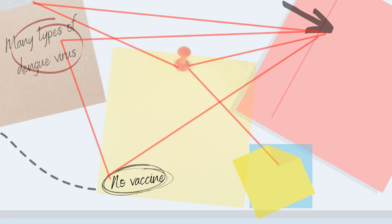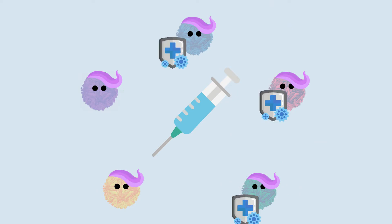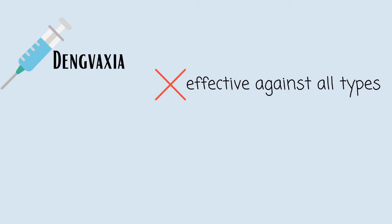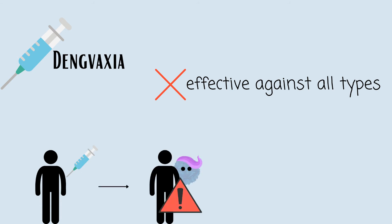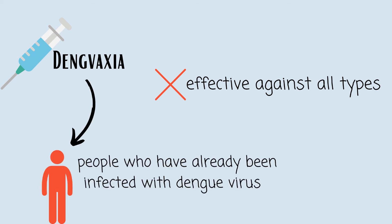Secondly, there are currently no Dengue vaccines approved for everyone. Due to the many types of Dengue virus, targeting them all at once is very important. For example, there actually is an approved vaccine called Dengvaxia. However, it was discovered that Dengvaxia is not equally effective against all types of Dengue virus. As a result, individuals who have not been infected with Dengue before and are vaccinated with Dengvaxia have an increased risk of getting severe disease if infected with Dengue after vaccination, which is the opposite to the aim of a vaccine.